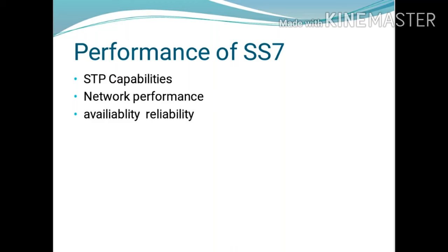The next point is Signaling System Number 7. SS7 is a global standard for telecommunication purposes. This standard defines the procedures and protocols for transferring traffic between network elements like PSTN and digital cellular systems or wireless networks.